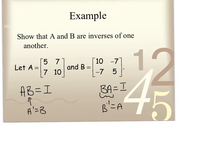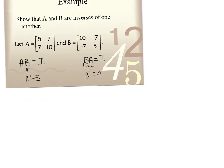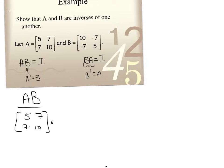So B would be the inverse of A, and A would be the inverse of B. So how do we do that? The idea is if we multiply these guys together, we're going to go ahead and get the identity matrix. Let's do A times B first. One thing I'll tell you — if you don't know how to multiply matrices, this next section is not going to be fun. So make sure you've got that fundamental skill down.